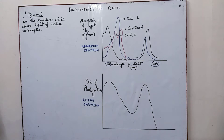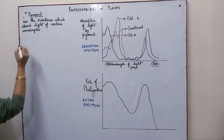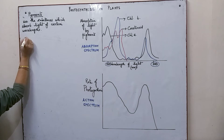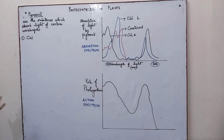When we see the plants around us, we see mostly green plants, but there are different colored plants. This is because of the pigments present in them. These pigments are responsible for absorbing certain wavelengths of visible light. There are basically four important types of pigments which are found to play an important role in photosynthesis.